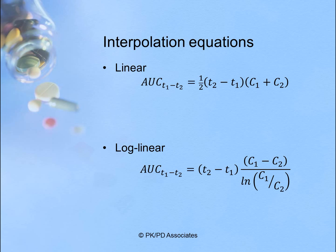Here are the equations that you would use. The linear equation is the one we're already familiar with: it's one-half times the difference in time times the sum of the two concentrations. The log-linear is similar but slightly different: it is the difference in time times the difference in concentrations, divided by the natural log of the ratio of concentrations. These are the equations needed when calculating log-linear interpolation for AUC calculations.